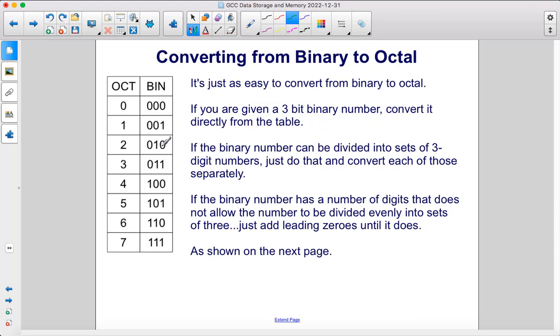It's just as easy to convert from binary to octal. If you're given a 3-bit binary number, convert it directly from the table. If the binary number can be divided into sets of 3-digit numbers, just do that and convert each of those separately. If the binary number has a number of digits that does not allow the number to be divided evenly into sets of 3, just add leading zeros until it does. Let's look at it on the next page.